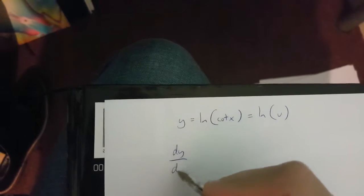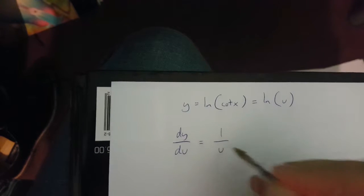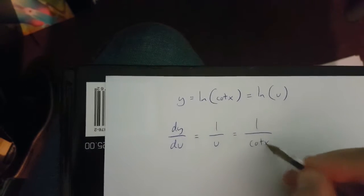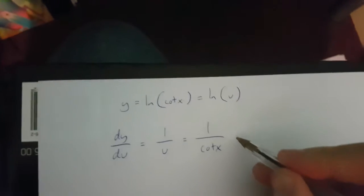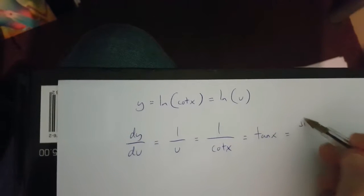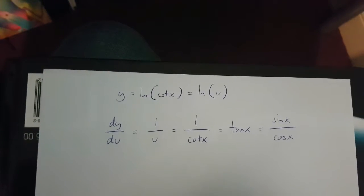then dy over du is going to be equal to 1 over u, which is 1 over cotx, which is equal to tanx, which is equal to sinx over cosx.